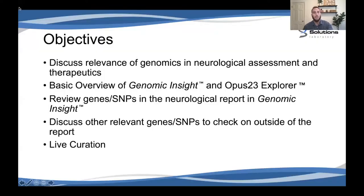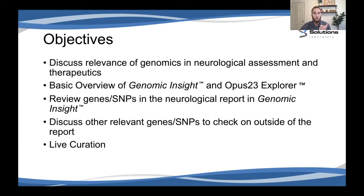Our objectives for today: discuss the relevance of genomics in neurological assessment and therapeutics, provide a basic overview of Genomic Insight and Opus 23 Explorer, review the genes and SNPs associated in the neurological report within Genomic Insight, discuss other relevant genes and SNPs to check outside of that report, and then do a live curation so you can see how we put together a report for a patient concerned about risk factors or in the early stages of this disease.